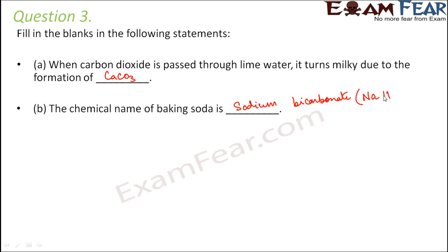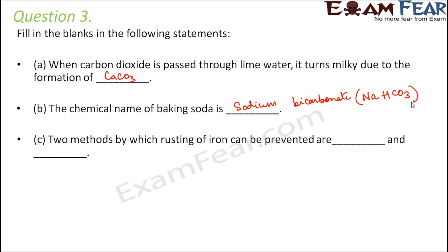The chemical formula of sodium bicarbonate or baking soda is NaHCO3. Two methods by which rusting of iron can be prevented are: one popular method is galvanization.